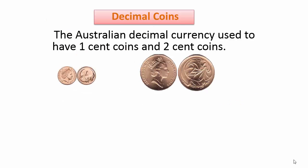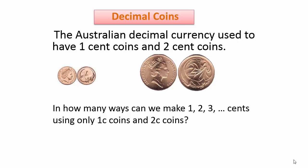Moving on from that, in a related way, is the Australian decimal currency. Many years ago we used to use one cent and two cent coins, but no longer. But what we are interested in now is to see how many ways we can make a total of one, two, three, four, five, and so on using just one cent and two cent coins.